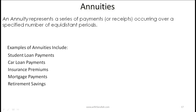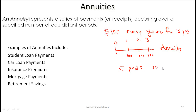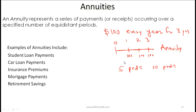An annuity represents a series of payments or receipts occurring over a specified number of equidistant periods. For example, if you need to make payments of $100 every year for three years — drawing a timeline at times 0, 1, 2, 3 with equal payments of 100 over three equidistant periods of one year each — this is an annuity. Had it been five or ten periods, or any equal amount over equal periods, it would still be an annuity.